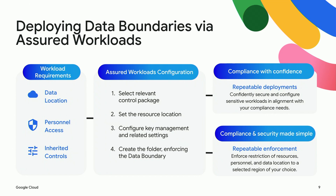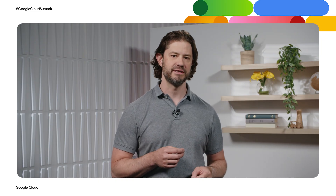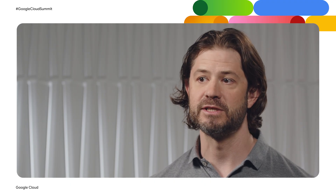This flexible model allows us to provide two main types of data boundaries. First, regional data boundaries provide strong data residency, sovereignty, and access controls, and are available in all Google Cloud regions globally. These are ideal for customers concerned with data sovereignty or the regional location of their data. Second, regulatory data boundaries are designed with controls tailored to specific regulatory frameworks. Our offerings cover a wide array of regulatory regimes, including FedRAMP, IL5, CJIS, and Canada Protected B, and we continue to expand the available boundaries as the regulatory environment evolves.